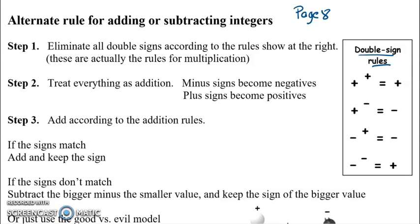So the idea is whenever you see a plus positive or a minus negative, it's going to turn into a plus. And if you see the two signs that don't match, like adding a negative or subtracting a positive, then that's going to become a minus. That's going to be step one. And then we're going to treat everything as addition after we do this.